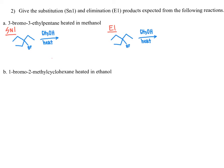We're asking for the SN1 and E1 products because these two reactions compete with one another whenever we have an alkyl halide reacting with a generally weak base. In the SN1 reaction, a nucleophile is going to replace the leaving group within the molecule, where the leaving group is our halogen.